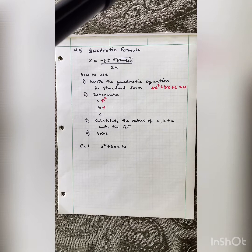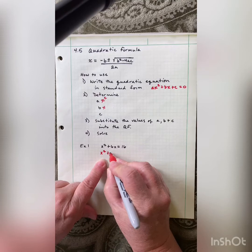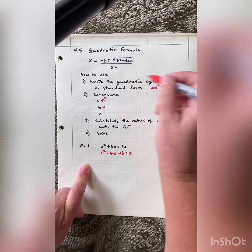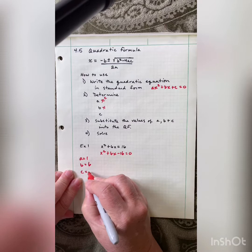Let's take a look at this first example. It is not in standard form. I need an equal 0 over here, so I'm going to move that to the other side, and get x squared plus 6x minus 16 equals 0. It is now in standard form. So my a is 1, my b is 6, and my c is negative 16.